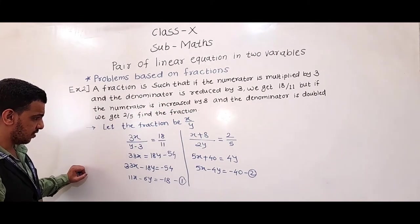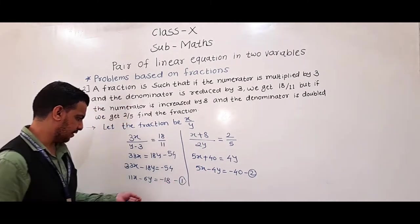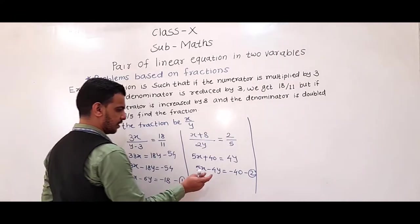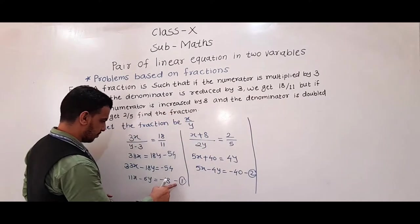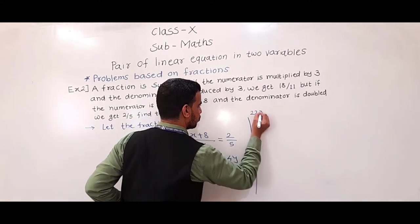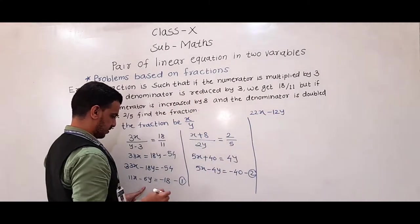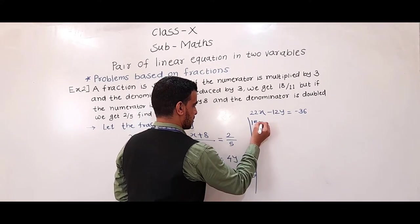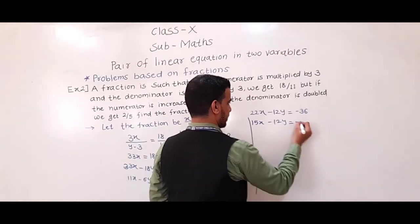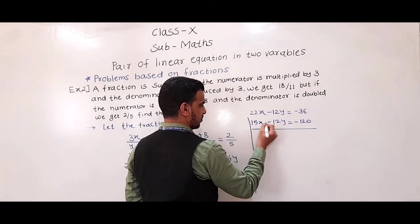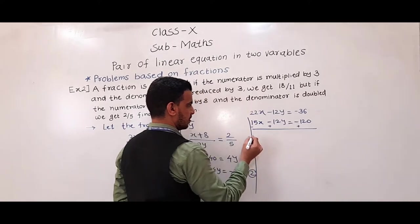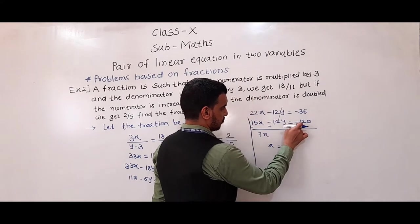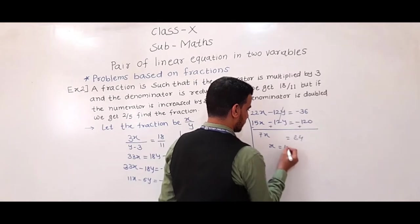Now, to solve equations 1 and 2, we make the coefficient of y equal. LCM of 6 and 4 is 12. Multiplying equation 1 by 2: 22x − 12y = −36. Multiplying equation 2 by 3: 15x − 12y = −120. Subtracting: minus plus plus, 22x − 15x = 7x, and −36 − (−120) = 84. So 7x = 84, x = 12.